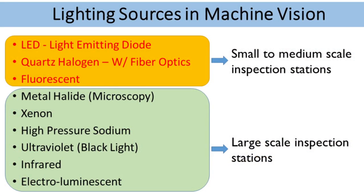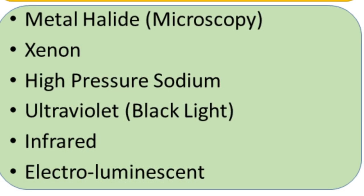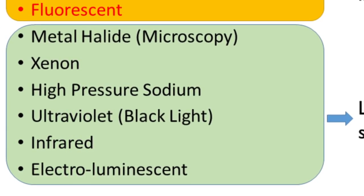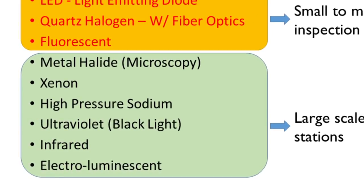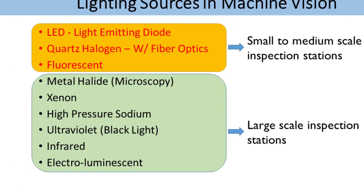The initial three sources — LED, halogen, and fluorescent — are used for small to medium scale inspection systems, where objects move on a conveyor with minimum speed. The last group — metal halide, xenon, high pressure sodium, ultraviolet, and infrared — are used in large scale inspection systems where a huge number of objects need to be inspected simultaneously.